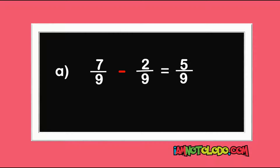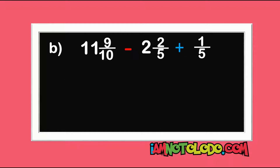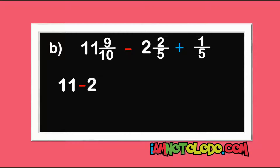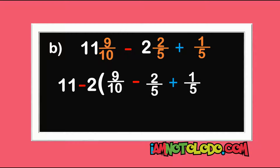Let's solve the second question. Whenever you see this type of question, the first thing you have to do is separate the whole number from the fractions — like this: 11 minus 2. Next step, open the brackets and write what is left: 9 over 10 minus 2 over 5 plus 1 over 5. Close your brackets.